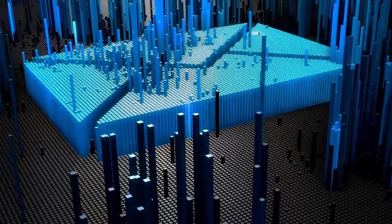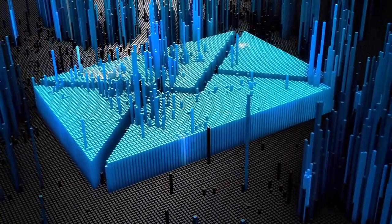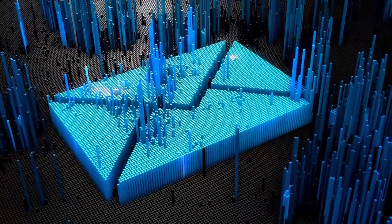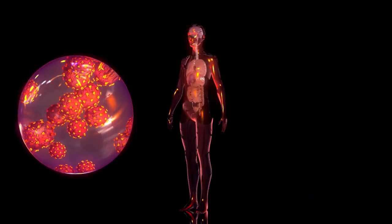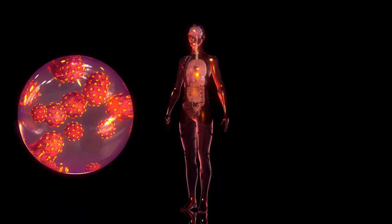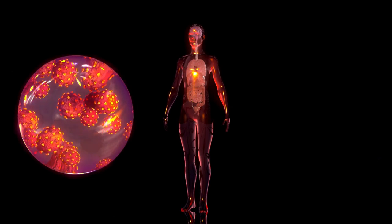The observable universe is the part of the universe that we can actually see and study using telescopes and other scientific tools. This includes everything from nearby stars and planets to the farthest galaxies we can detect.